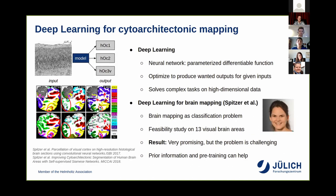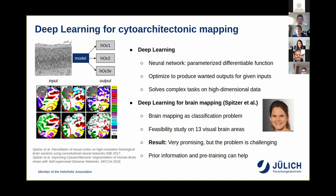Our method of choice is deep learning. In deep learning we are mostly concerned with neural networks — often called artificial neural networks — which are basically parameterized differential functions. These functions are optimized to produce wanted outputs for given inputs. Our inputs might be small patches extracted from the cortex, which we pass to a model to predict which area that specific patch belongs to. We can then optimize the parameters with a large enough dataset so that the model is ultimately able to classify new patches and automate the mapping process.